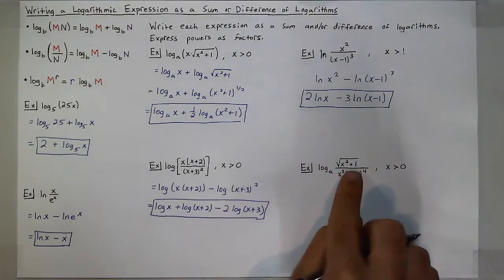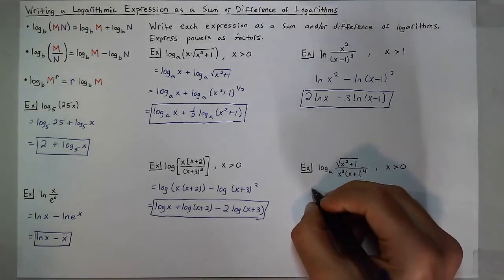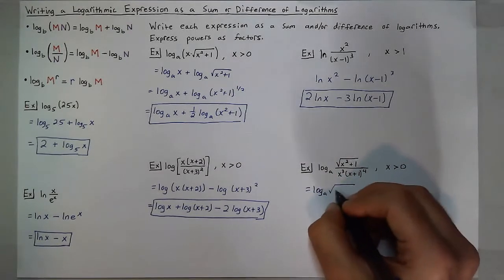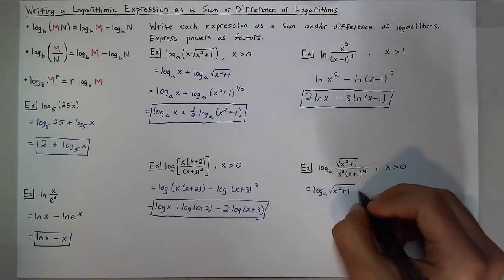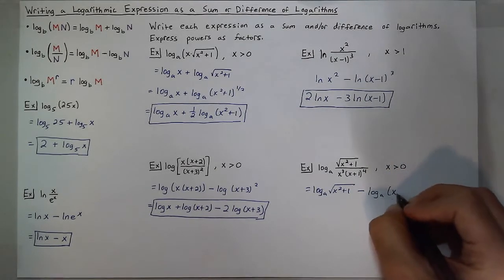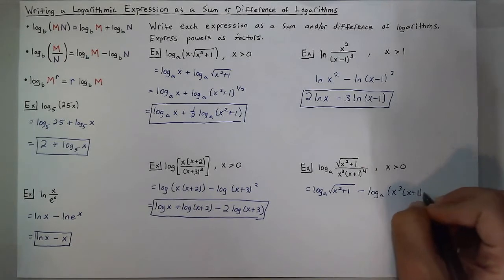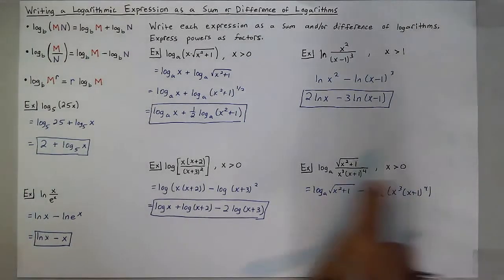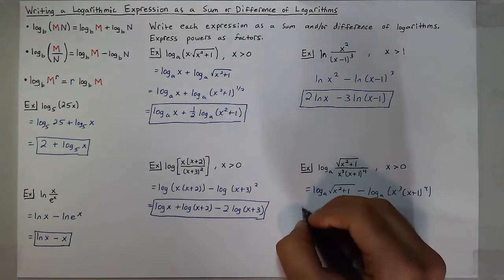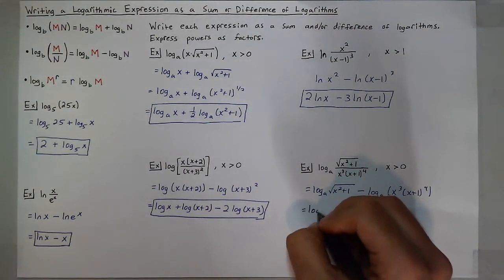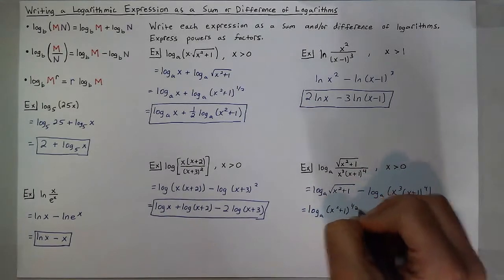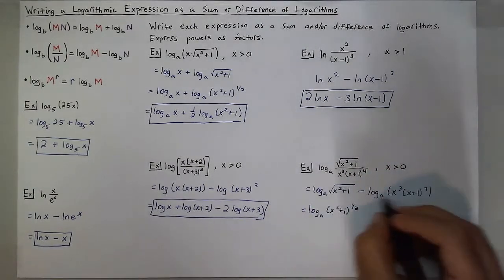This last one, it starts off with division. So I have log base a of the square root of x squared plus 1 minus log base a of x cubed times x plus 1 to the 4th. Now, the square root of x squared plus 1 can be written as log base a of x squared plus 1 to the 1 half, so I can take care of that power. And on the right,